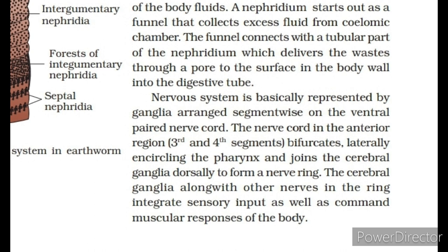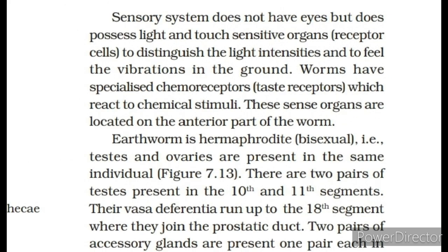The nervous system is basically represented by ganglia arranged segmentally on the ventral paired nerve cord. The nerve cord in the anterior region (3rd and 4th segments) bifurcates laterally, encircles the pharynx and joins the cerebral ganglia dorsally to form a nerve ring. The cerebral ganglia, along with other nerves in the ring, integrate sensory input and command muscular responses of the body. The sensory system does not have eyes but possesses light- and touch-sensitive receptor cells to distinguish light intensities and feel vibrations in the ground.